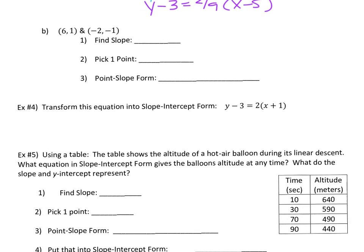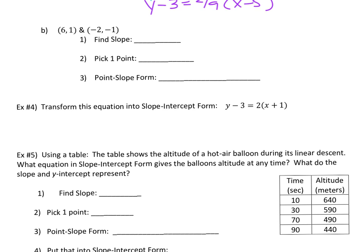Now you try problem B — find the slope, pick a point, and write it in point-slope form. For the slope: (−1 − 1) / (−2 − 6) = −2 / −8. Don't forget: negative divided by negative is positive, then reduce — that gives you positive one-fourth. Leave it as a fraction rather than a decimal, because 0.25 is hard to graph, but one-fourth is not.